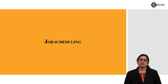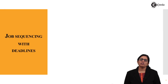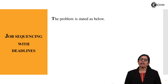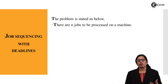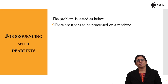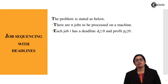So what is job sequencing with deadlines? That is a major issue which needs to be studied in job scheduling. There are n jobs which need to be processed on a machine. Each job has a deadline which is greater than or equal to zero, and the profit P is greater than or equal to zero.